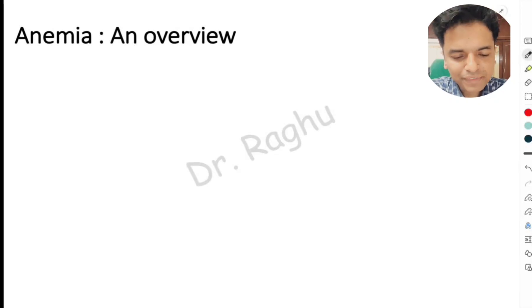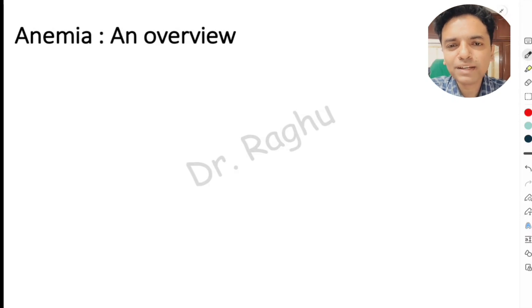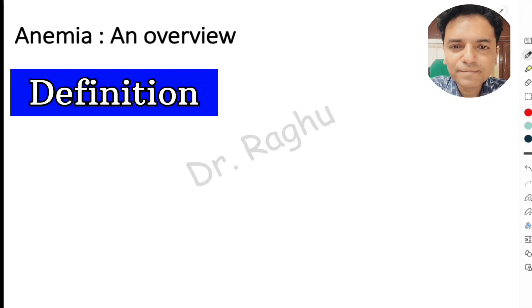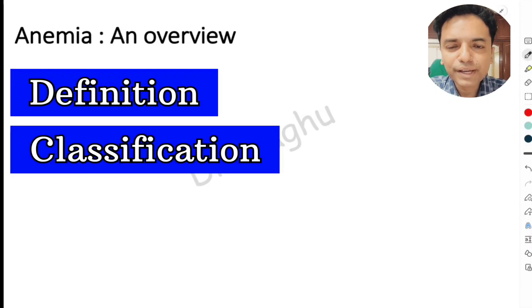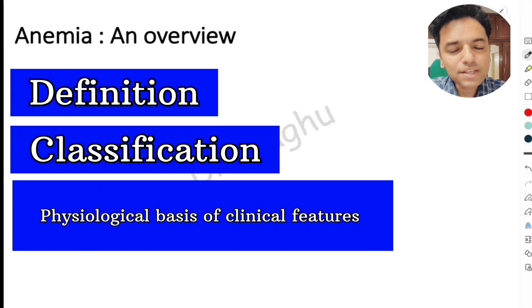Hello there, welcome back to my channel. In this video let's understand three very important aspects regarding anemia. The learning objectives for this session are three things which are repeatedly asked in examinations: first, the definition of anemia; second, the classification of anemia — which can be classified on the basis of morphology, etiology, and severity; and third, the physiological basis of the clinical features in anemia.